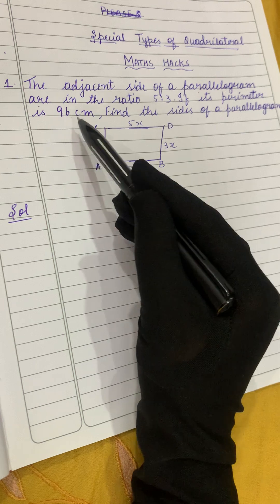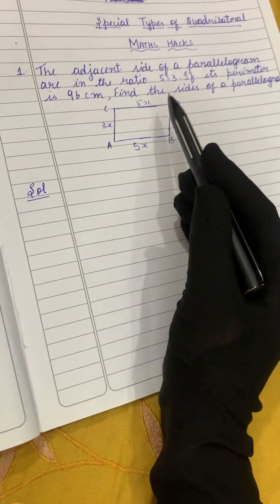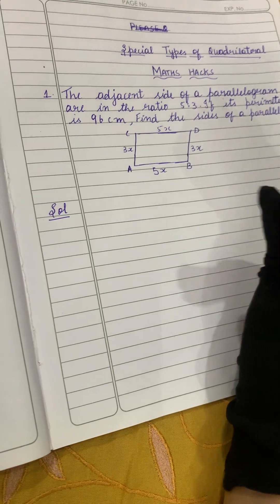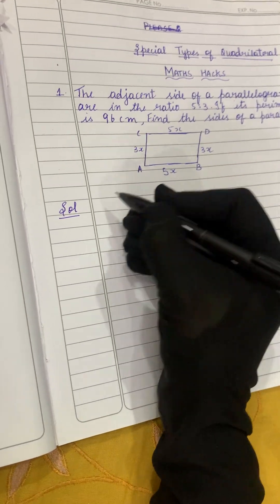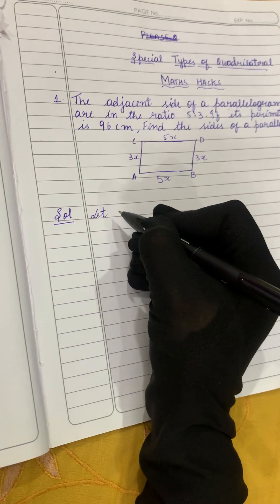If its perimeter is 96 centimeters, find the sides of a parallelogram. So this is a parallelogram. What is a parallelogram? It's a quadrilateral but the sides are parallel. Let's solve this sum.